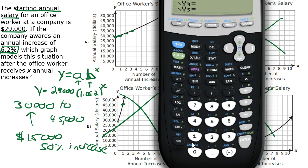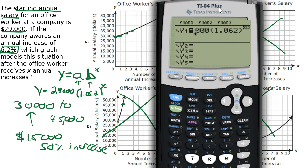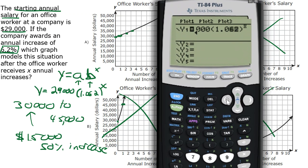Times 1.062, close the parentheses, to an exponent of X. If you take a look at it, I just typed out the function that we wrote.